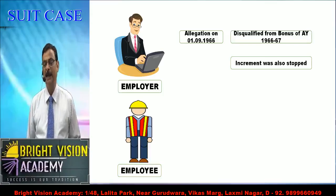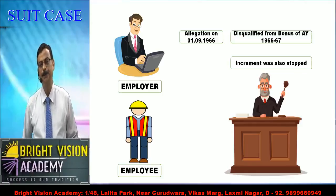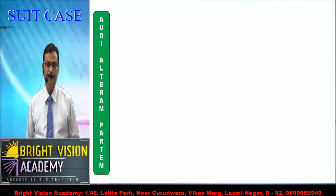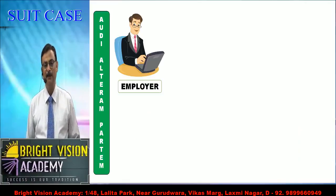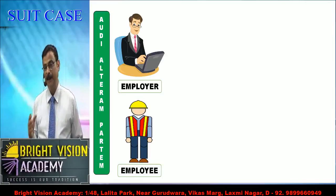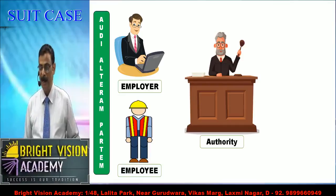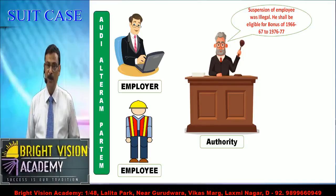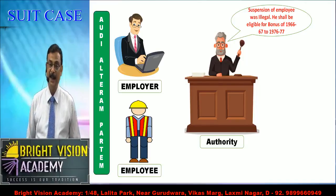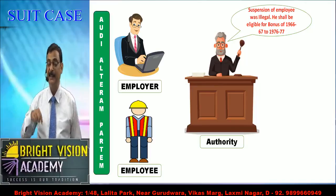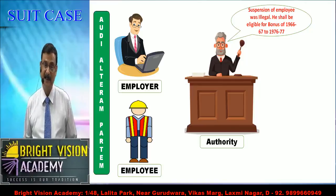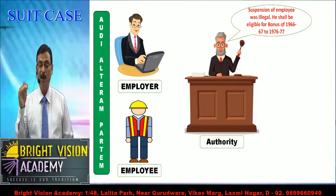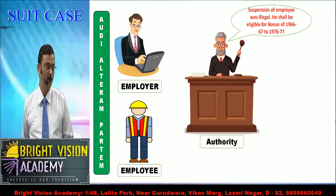The employee was very aggrieved and he went to the labor court. The labor court issued notice to the employer and the employee. After listening to their arguments, the labor court held that the suspension of the employee was illegal. He shall be eligible for bonus of 1966-67 up to the date of his reinstatement till 1976-77. He was suspended for 10 long years, and then after inquiry by the court, he was reinstated with back wages.